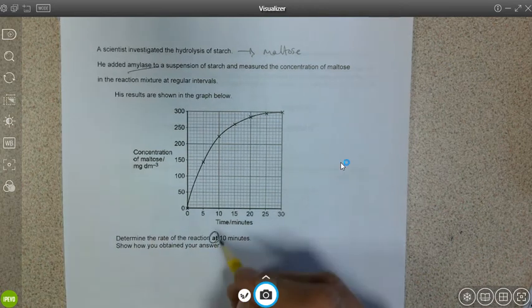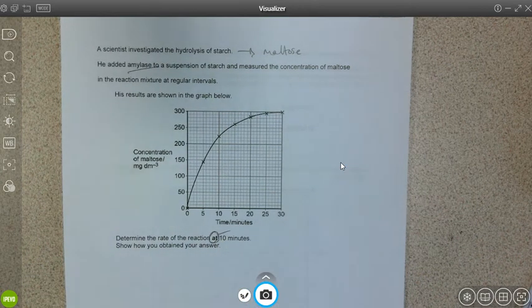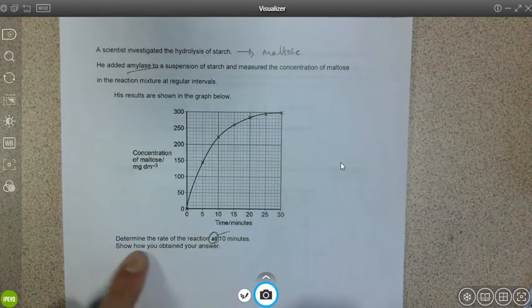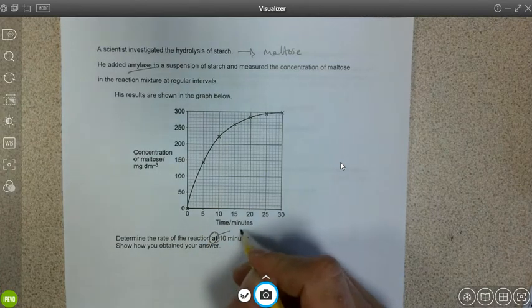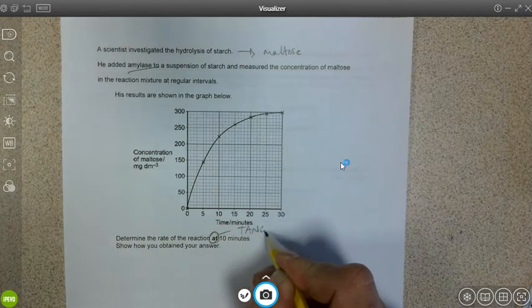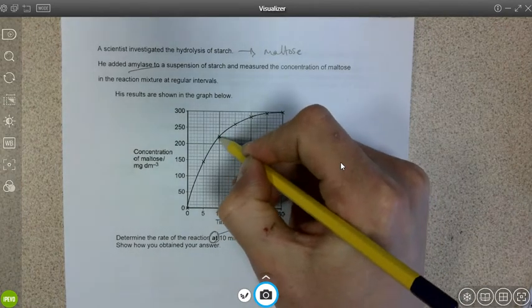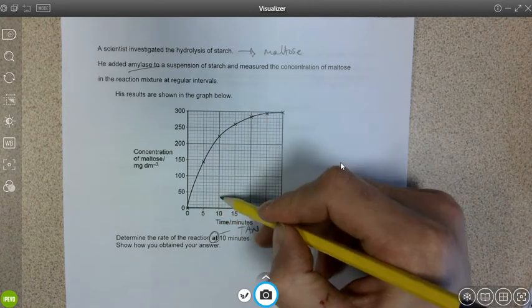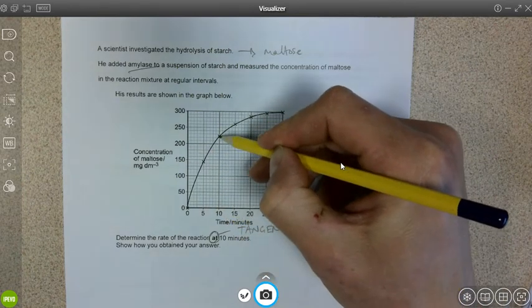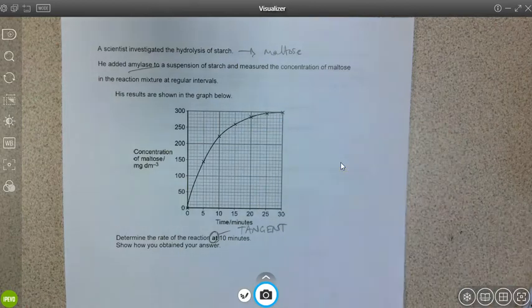Whenever we see this instruction in a question, to determine the rate at a particular time, that means we need to draw a tangent on the curve because we want to know what the gradient of the curve is at this particular time at 10 minutes.